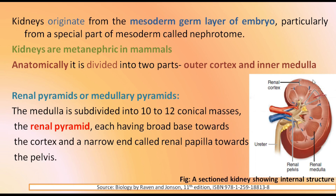In this figure we can see the section of the kidney showing the internal structure. The outer part is the cortex and the inner part is the medulla. In the medulla portion there are renal pyramids or medullary pyramids. The medulla is divided into 10 to 12 conical masses called the renal pyramids, which have a broad base towards the cortex and a narrow end towards the medulla. These narrow ends are called renal papillae, and they extend into the pelvis.